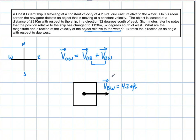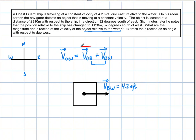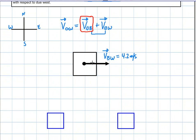We already have the velocity of the boat with respect to the water, so that's not a problem. What we're going to be looking for first is the velocity of the object with respect to the boat — we don't have that yet. We're given some information about this object that's moving relative to the boat, so let's work with that.